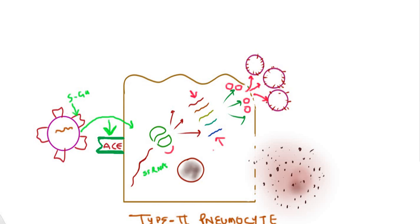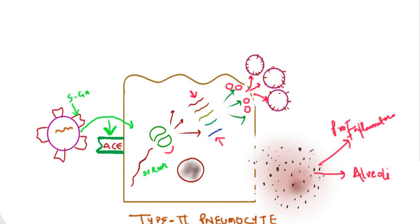As a result of the rupture of type 2 pneumocytes, the cytokines normally contained within them are released into the alveoli. These are pro-inflammatory cytokines, meaning they cause inflammation within the alveoli. The cytokines released include interleukin-1, interleukin-6, and tumor necrosis factor alpha, or TNF-alpha.